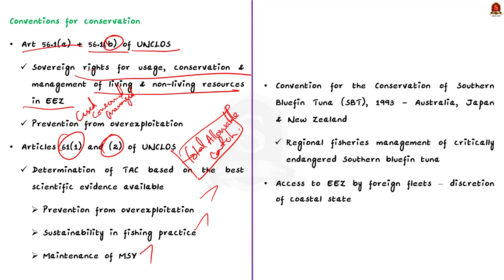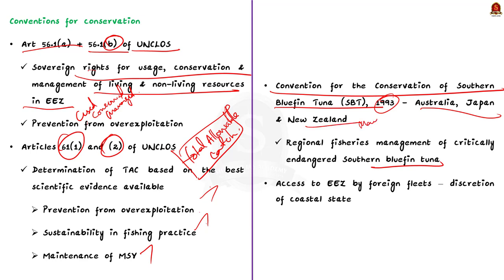The author also suggests looking at the Convention for the Conservation of Southern Bluefin Tuna 1993 (CCSBT), a regional fisheries management organization for managing stocks of the critically endangered Southern Bluefin Tuna, signed by Australia, Japan and New Zealand in May 1993. This will give information about enabling recovery of depleted fishing stocks. Additionally, according to UNCLOS, access to the exclusive economic zone by foreign fleets is solely within the coastal state's discretion and subject to the laws and regulations of the coastal state.